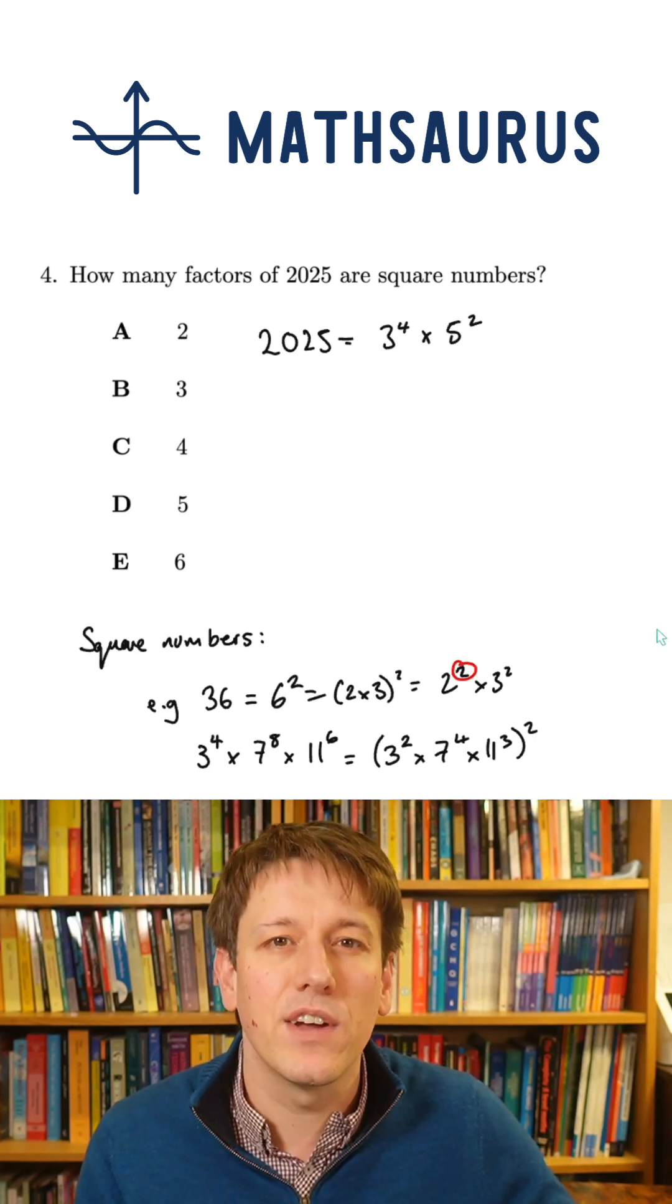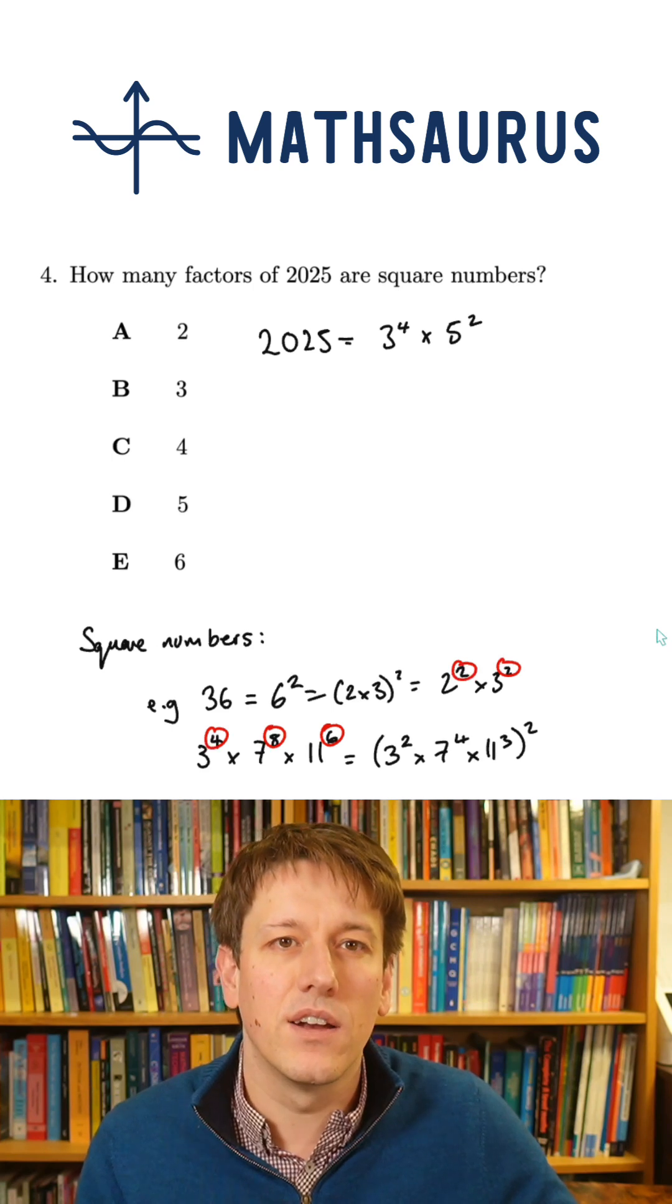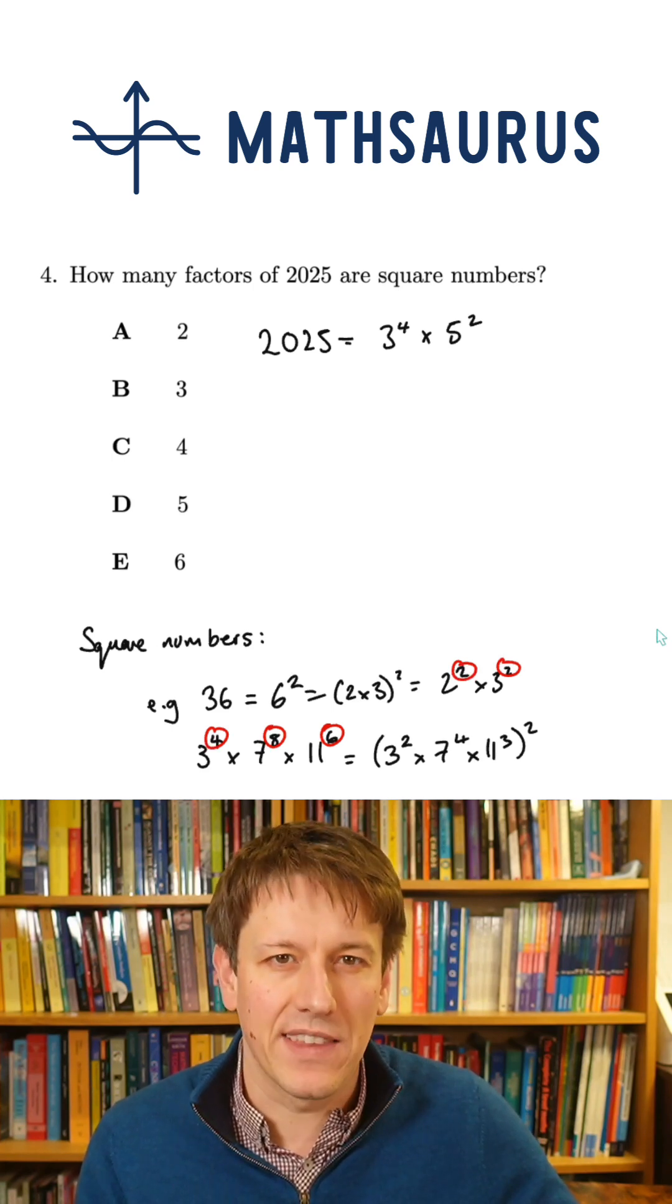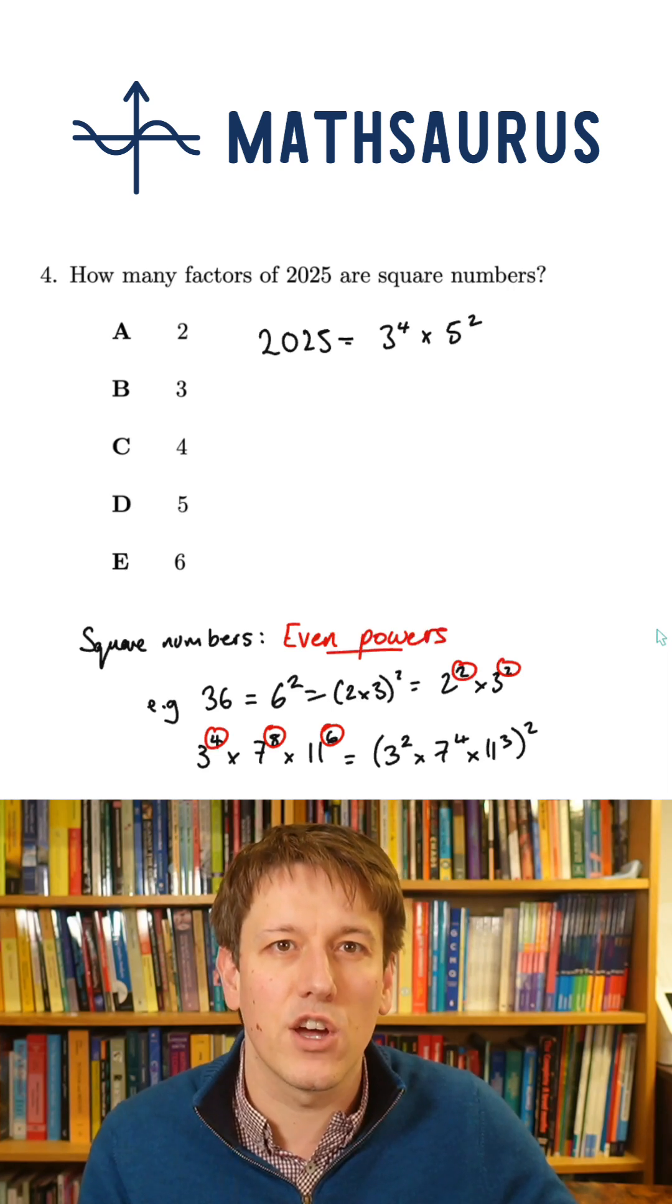So you can see that we only have square numbers when the powers are even numbers, because it means we can halve the powers and get the square root of the number, and it would work exactly as so.